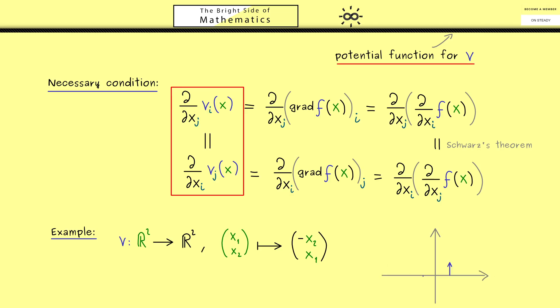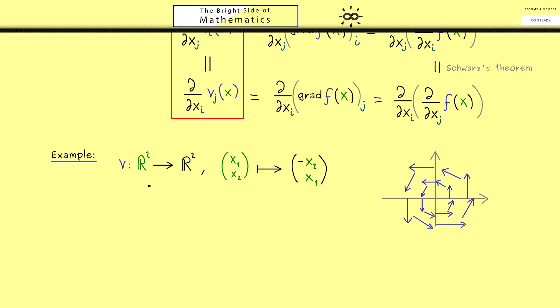So for example, for the points on the axes, we have these vectors here. And indeed, it's not hard at all to fill in the other ones. So you see, roughly what we get is such a vector field, that looks like a rotation around the origin. And now the crucial part is, that this condition here is not fulfilled for this v.